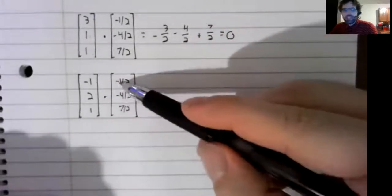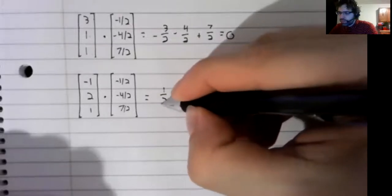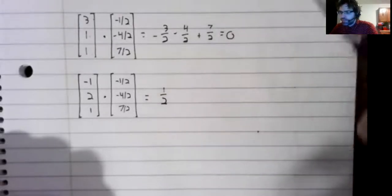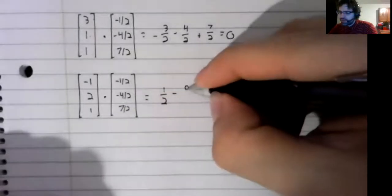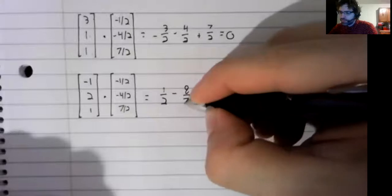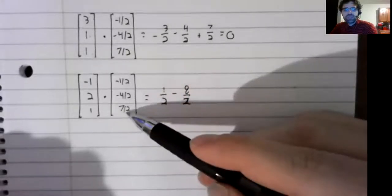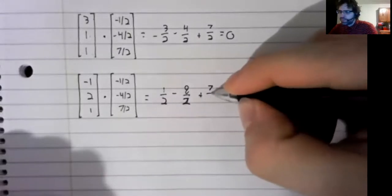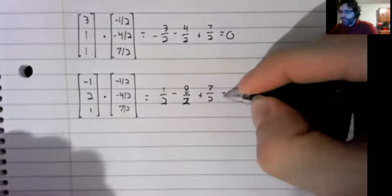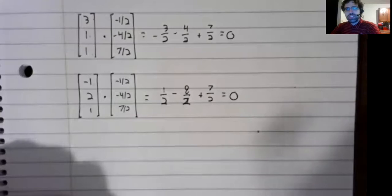Negative one-half, positive one-half, minus eight-halves, plus seven halves. And yes, indeed, that's zero.